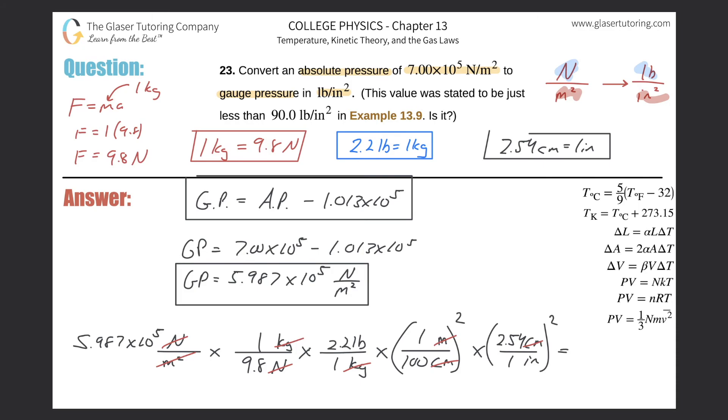Just plug it into the calculator now. 5.987 times 10 to the fifth, multiplied by 2.2, multiplied by 2.54 squared, and then divided by, please place parentheses here, divided by 9.8 times 100 squared, and then close those parentheses for the denominator. We're going to get a value of about 86.7. This would be in pounds per inches squared.